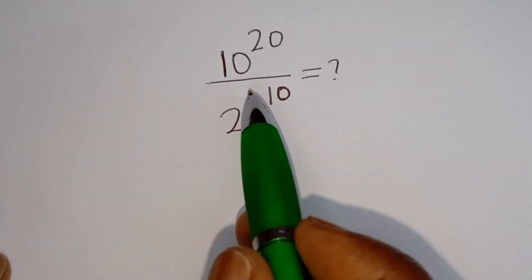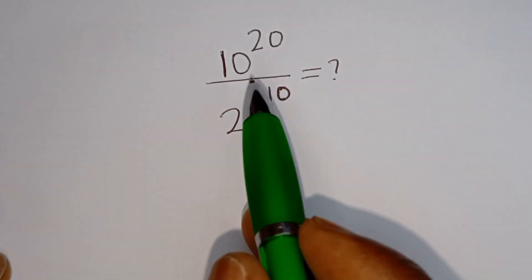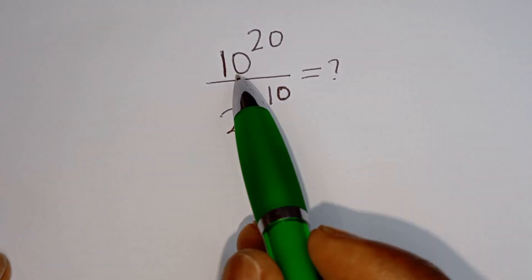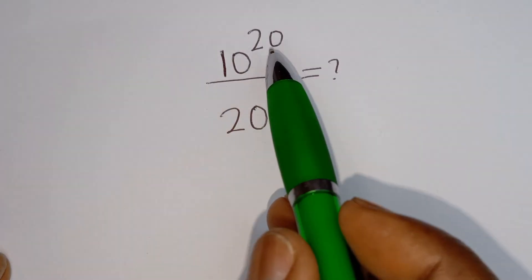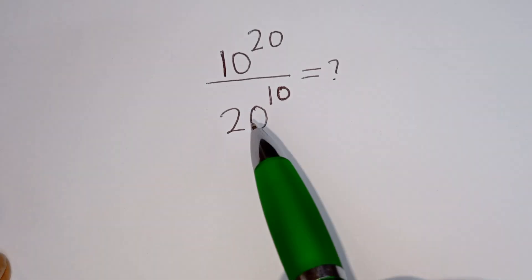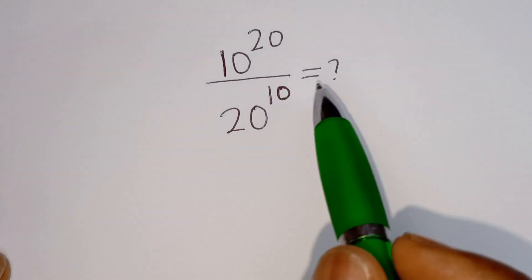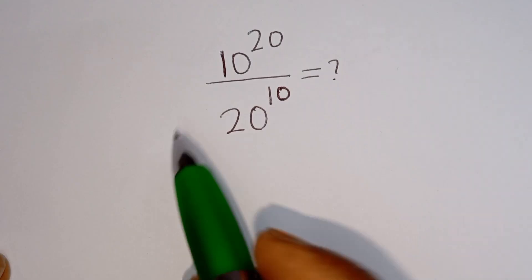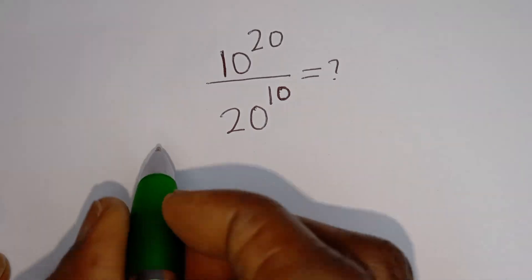Hello, how to simplify this nice math problem without using a calculator? 10 to the power of 20 divided by 20 to the power of 10 is equal to what? Solution.